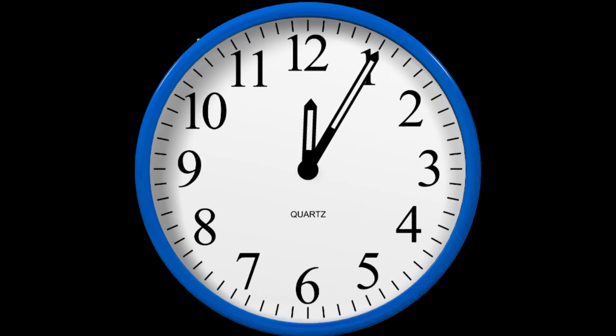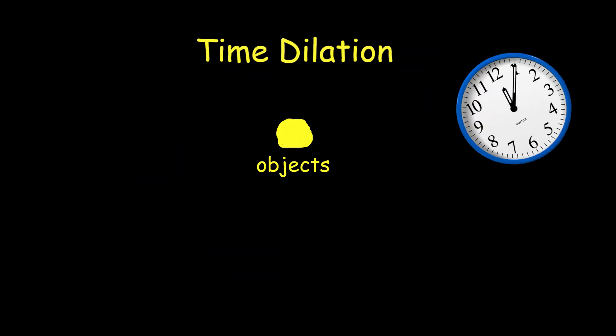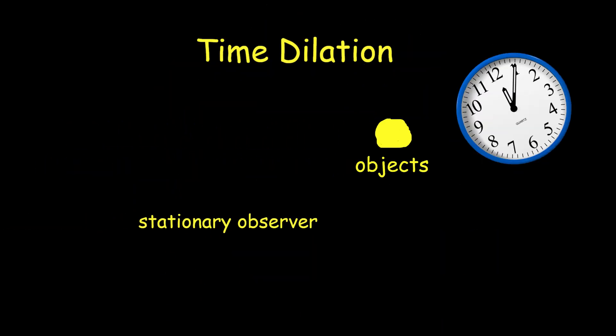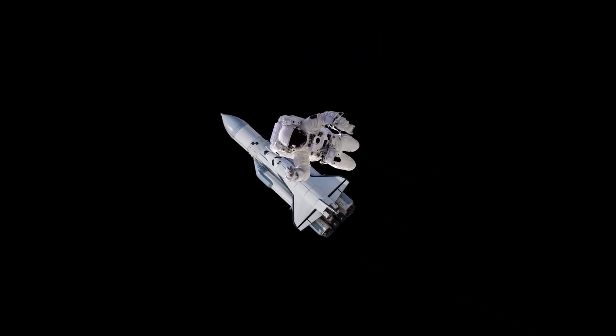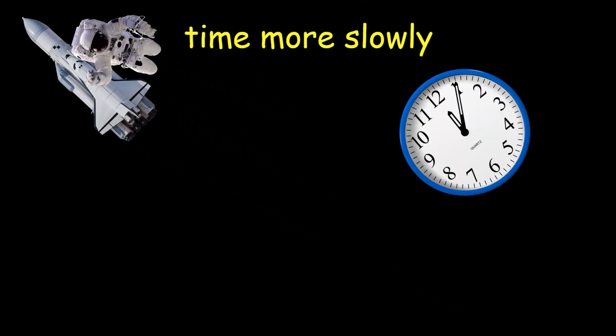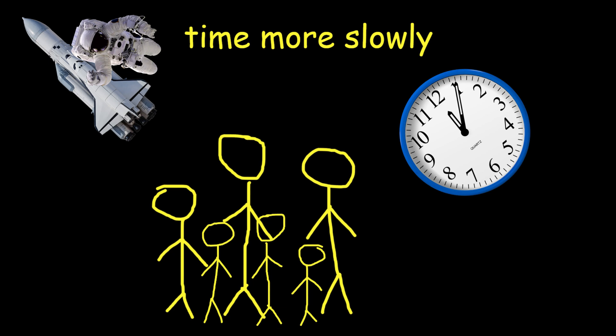Time dilation: time slows down for an object moving at high speed relative to a stationary observer. This means if you travel at a significant fraction of the speed of light, you will age more slowly compared to someone who stays still. For example, astronauts traveling at high speeds in space would experience time more slowly than people on Earth.